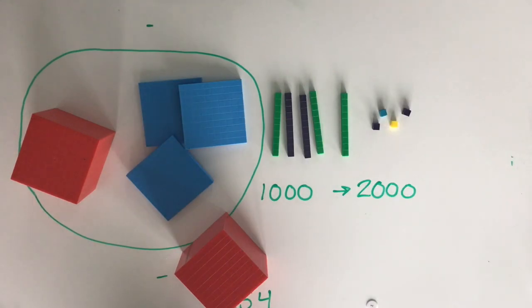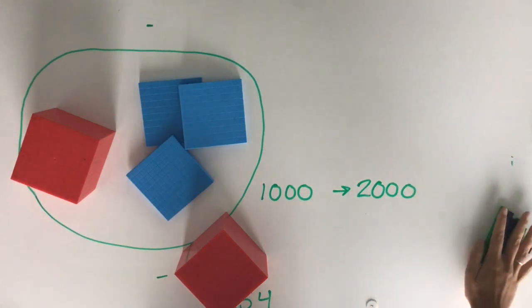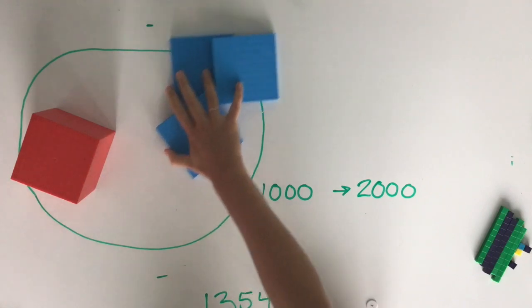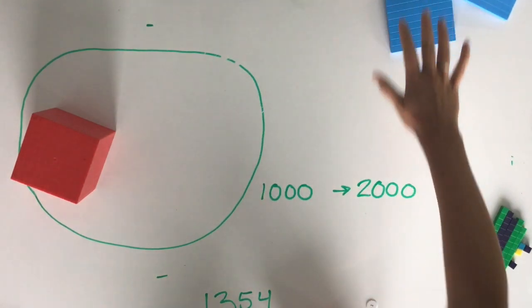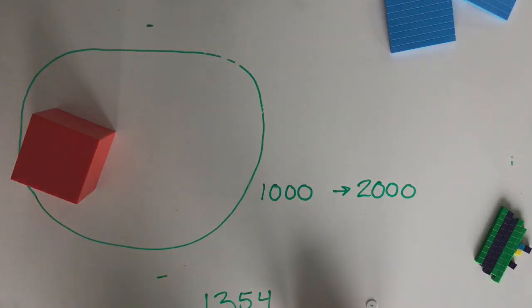Because we've determined that we will round down, we don't need any of our tens or ones, our additional 1,000, or our hundreds. So, 1,354 rounds down to 1,000.